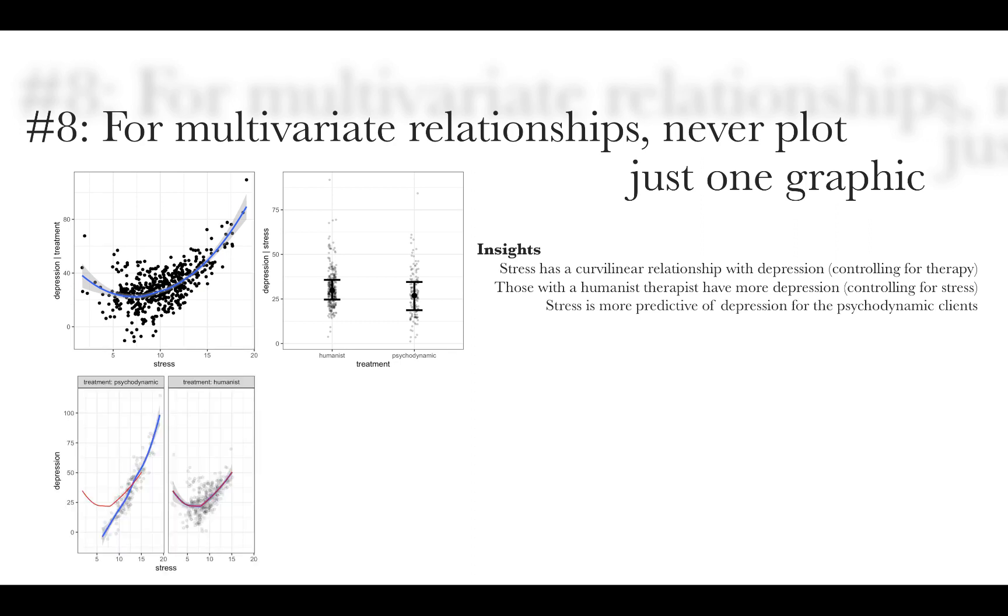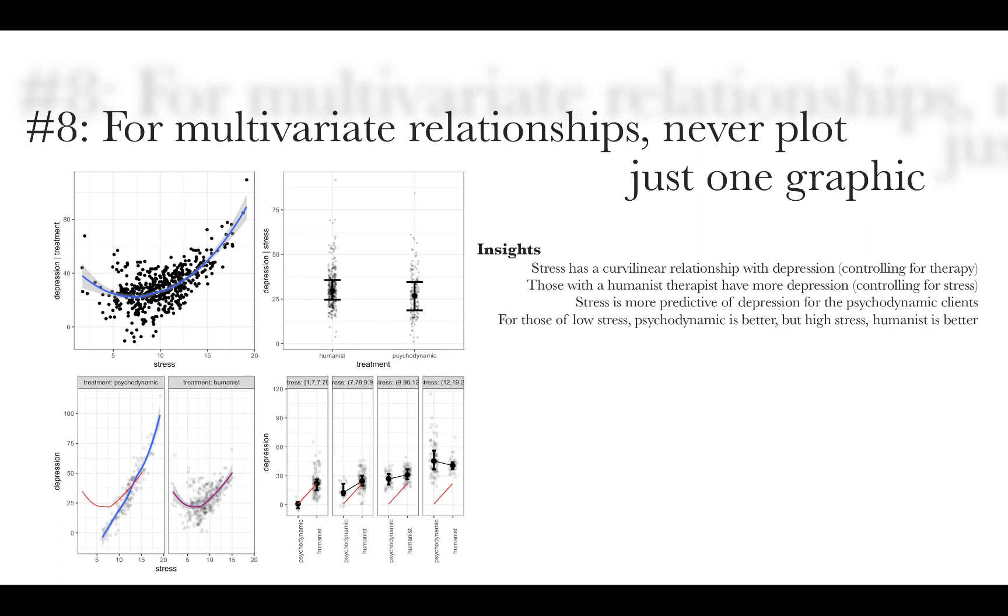In this one, we are looking at the relationship between stress and depression as a function of the orientation of the therapist. And it looks like for clients of humanist therapists, the relationship is curvilinear. But for psychodynamic therapists, it is not curvilinear. It's actually a stronger relationship and it's positive. And then finally here, instead of paneling based on treatment, we are paneling based on stress. And we see that there is a strong interaction effect going on here such that if you are low in stress, you're much better off with a psychodynamic therapist. On the other hand, if you're really stressed out, then you're probably going to be better with a humanist therapist.